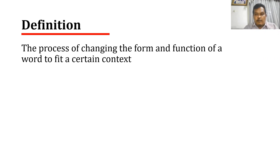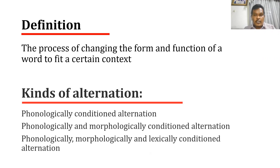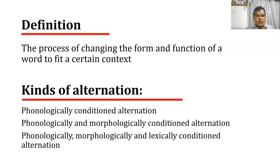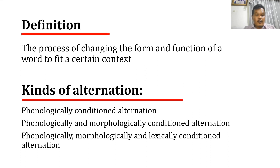Talking about changes means talking about alternations. We are exposed to three kinds of alternation, and morphological processes work at the third kind: phonologically, morphologically, and lexically conditioned alternation. In other words, morphological processes work at the lexical level, or at the level of lexicon.